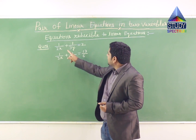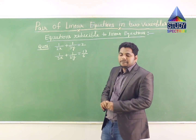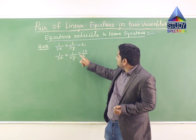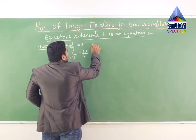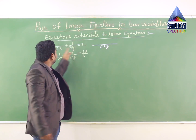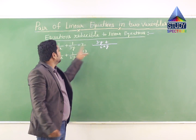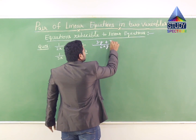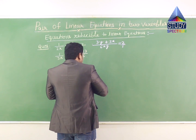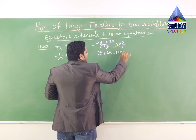The question is: find the value of X and Y such that 1/(2X) plus 1/(3Y) equals 2, and 1/(3X) plus 1/(2Y) equals 13/6. If you observe and solve the first equation, the LCM of 2X and 3Y is 6XY. So 6XY divided by 2X is 3Y, giving 3Y plus 2X equal to 2 after cross multiplication, which gives 3Y plus 2X equal to 12XY. This is not a linear equation.